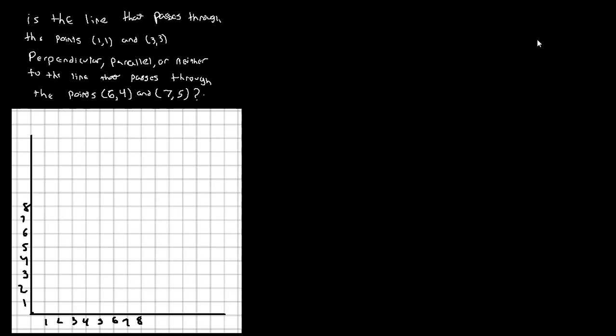Hello everyone and welcome back to another GIS mathematics lecture video. In this video I want to tie together everything we talked about by addressing the following example. Is the line that passes through the points (1,1) and (3,3) perpendicular, parallel, or neither to the line that passes through the points (6,4) and (7,5)?